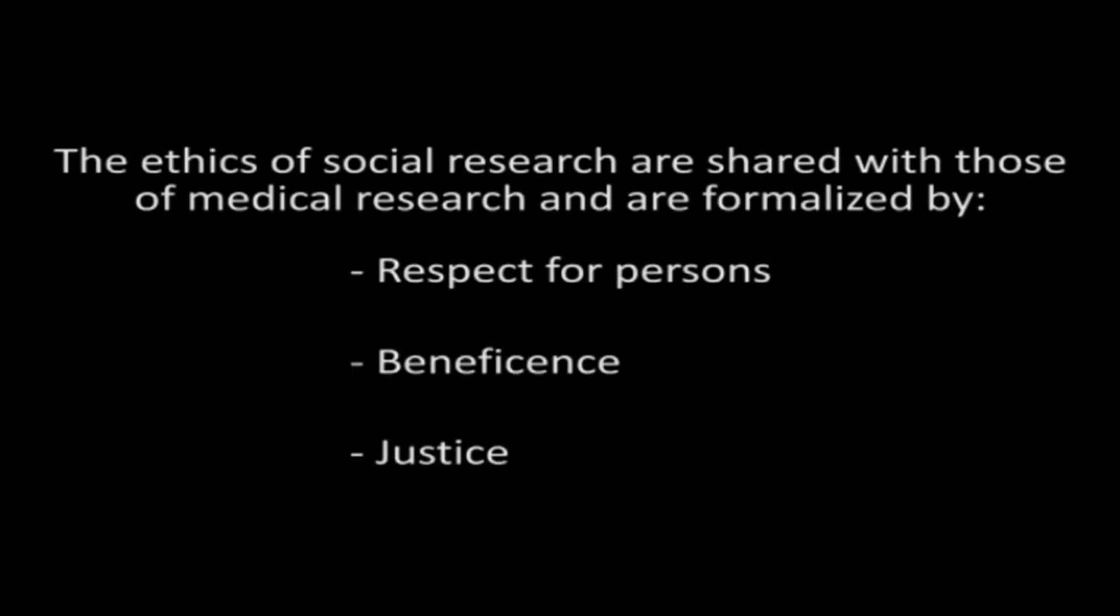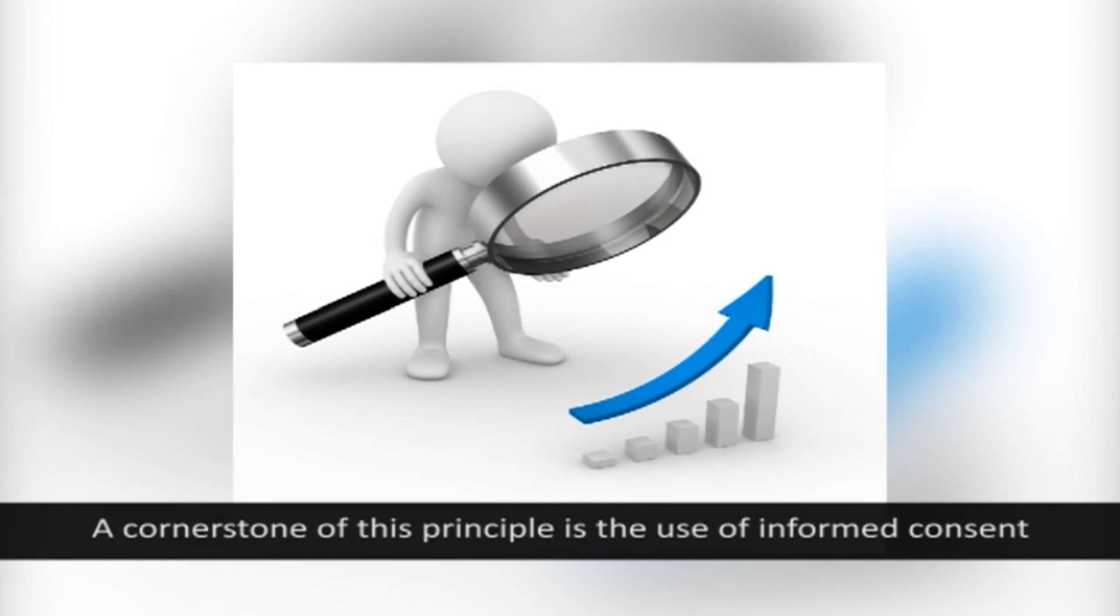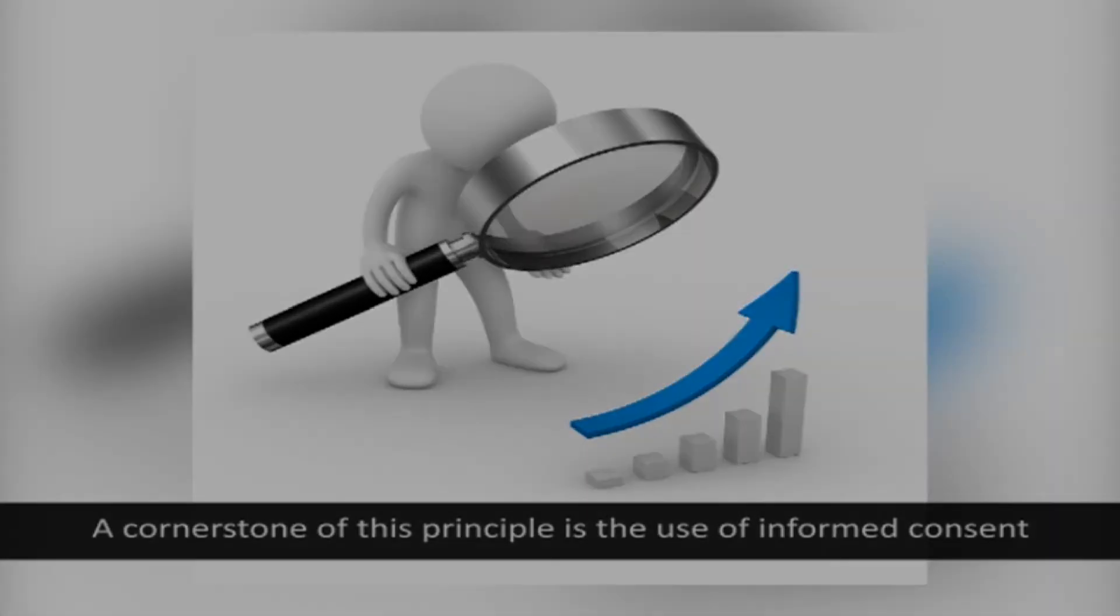The Ethics of Social Research are shared with those of medical research. The ethics of social research include Respect for Persons, Beneficence, and Justice. Respect for Persons: The principle of respect for persons holds that individuals should be respected as autonomous agents capable of making their own decisions. Subjects with diminished autonomy deserve special considerations. A cornerstone of this principle is the use of informed consent.